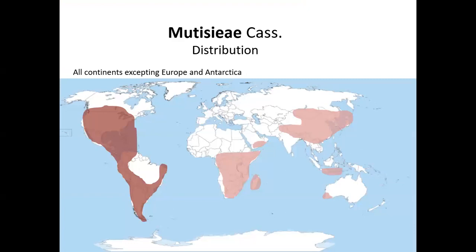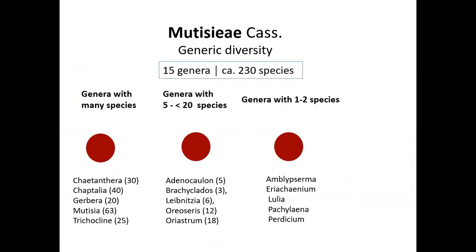Regarding the distribution, the members of Mutisieae are distributed on all continents except Europe and Antarctica, but are mostly concentrated in the Americas. The tribe comprises 15 genera and around 230 species, with a balanced composition including genera with many species such as Ketantera with 30 species, Chaptalia with 40, and Mutisia with 63.